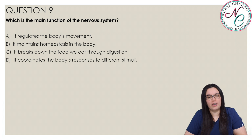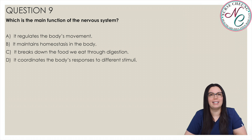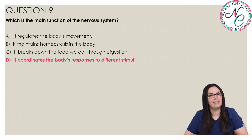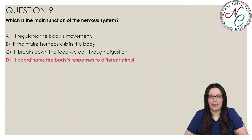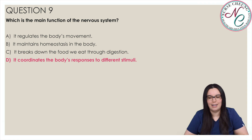Which is the main function of the nervous system? Is it A, it regulates the body's movements; B, it maintains homeostasis in the body; C, it breaks down the food we eat through digestion; or D, it coordinates the body's responses to different stimuli? The correct answer is D — the nervous system coordinates the body's responses to different stimuli, acting as a regulator by responding through receptors. The muscular system regulates movements, the endocrine system maintains homeostasis, and the digestive system breaks down food, so choices A, B, and C are incorrect.